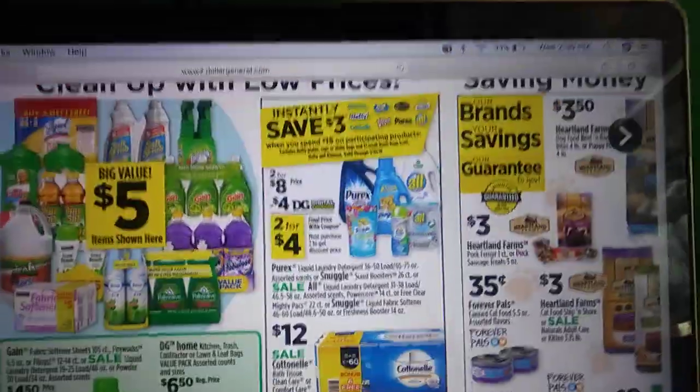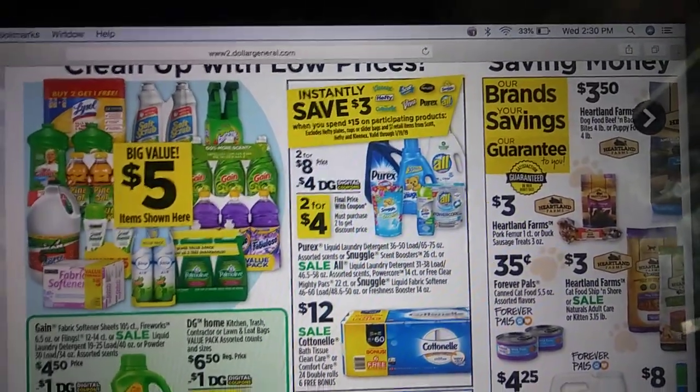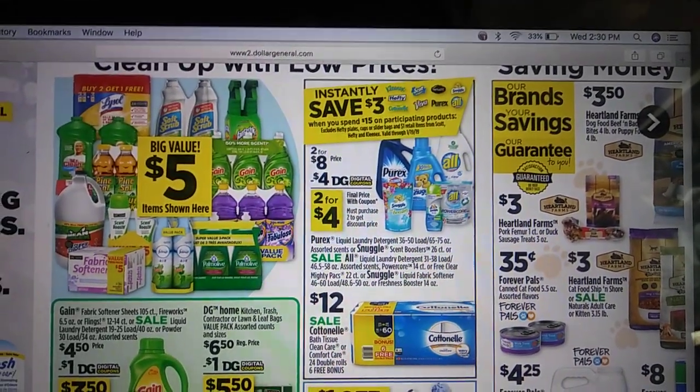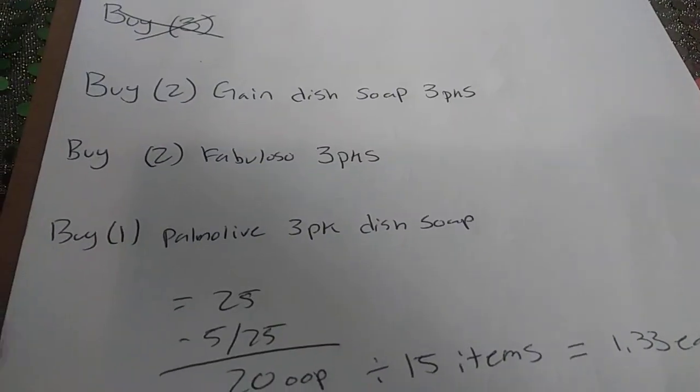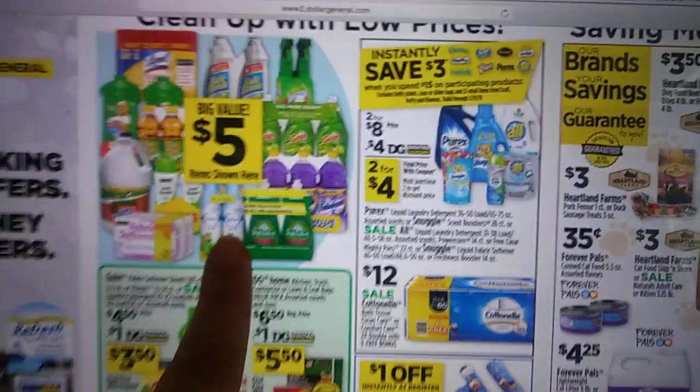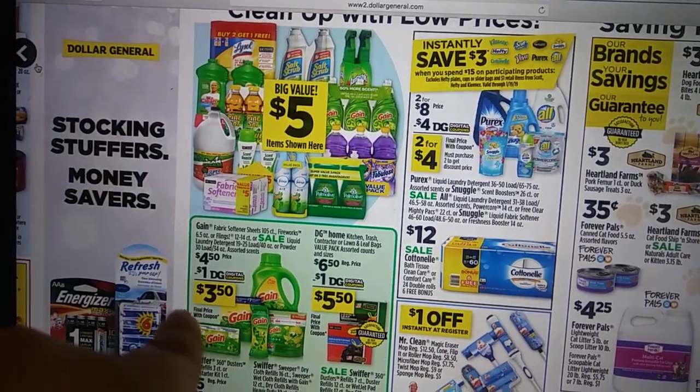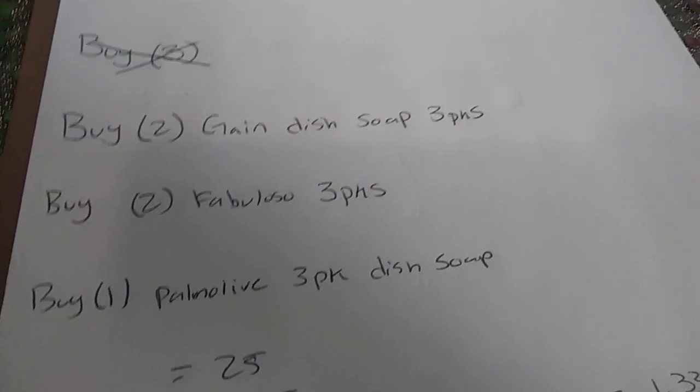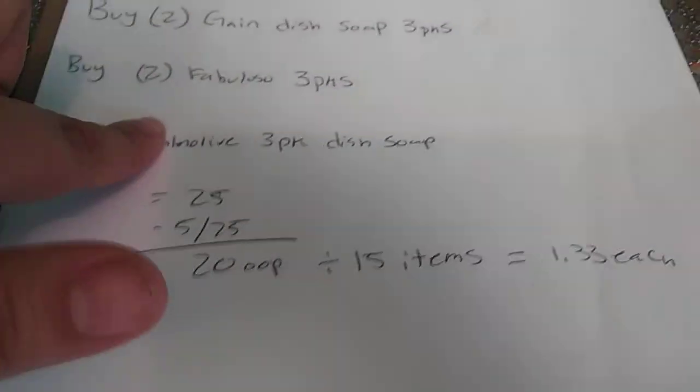The last deal I have for you guys is for this sale here with these $5 items. So this one is just so you can grow your stockpile or if you're in some need for a lot of soap or anything. This one's really simple, no coupons or anything. It is just buy two of the Gain dish soap three packs. So that's these ones here. Two of the Fabuloso three packs right here. And then I put one of the Palmolive, which is the one here. So there's lots of different things included. This is a three pack of Pine-Sol. They have the two pack of Mr. Clean, the three pack of Lysol. So lots of different things included that you could grab. After that, it comes up to $25 since each pack is $5. Use that $5 off $25, it'll make it $20 out of pocket for 15 items because each one of these packs comes with three.